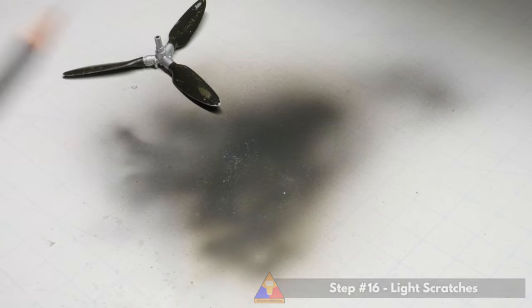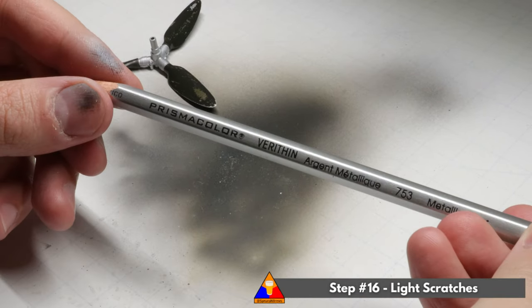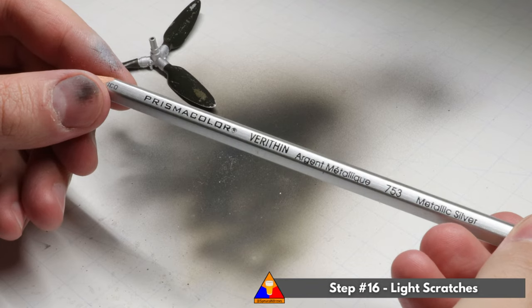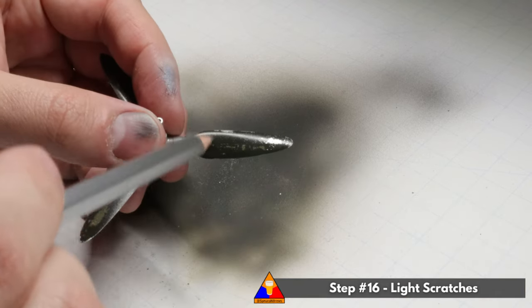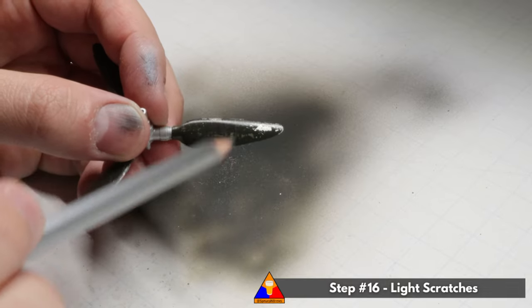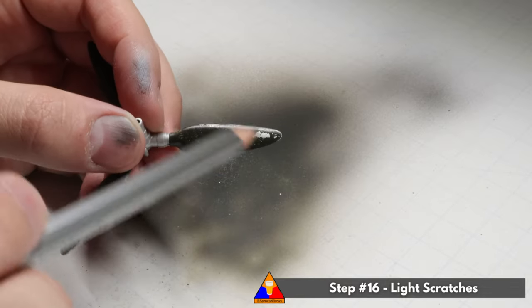Now for another little trick, and this one adds a ton of character. It's one of my personal favorites. We're going to grab a metallic pencil. We'll use this to make some little haphazard scratches on our prop blades. These are going to be the very lightest layers of weathering, but they make all the difference in the world in the finished product.